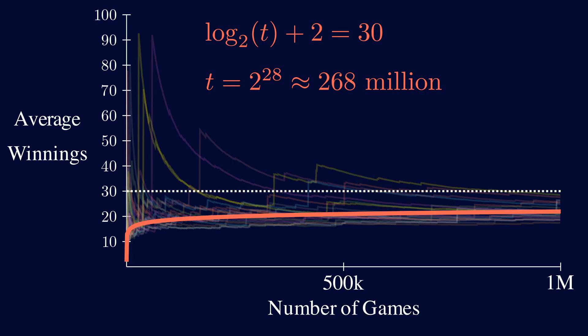So if we play one St. Petersburg game per second, at that rate, it will take roughly 8.5 years before we see a profit. Whether or not you should play this game at a $30 cost depends on whether you have 8.5 years to waste.